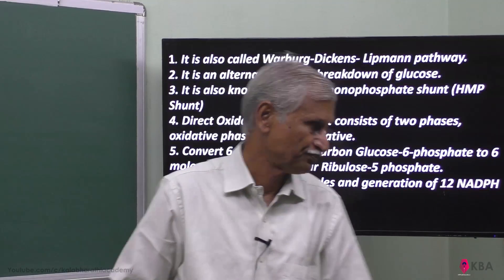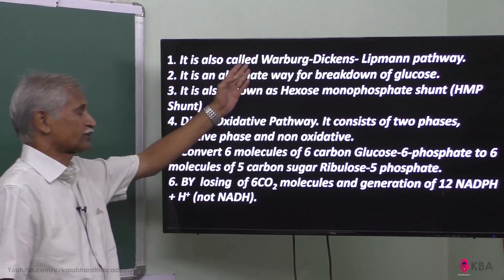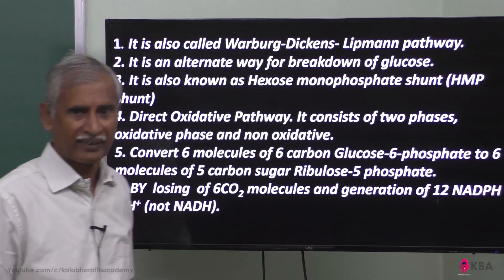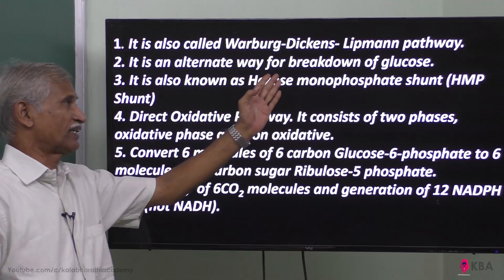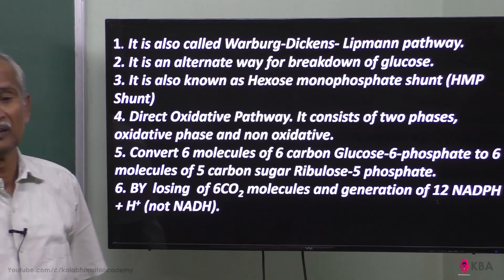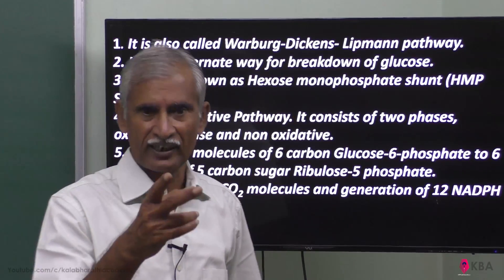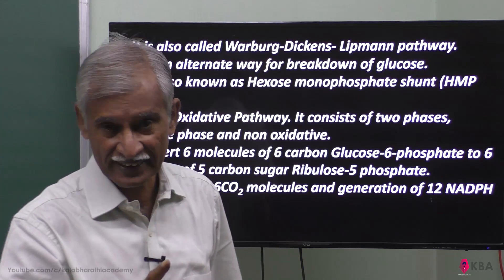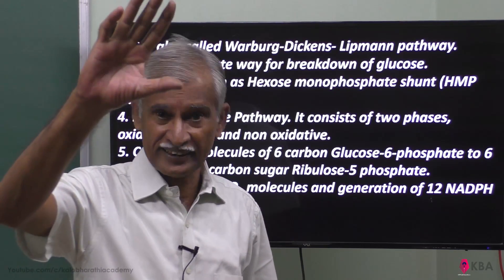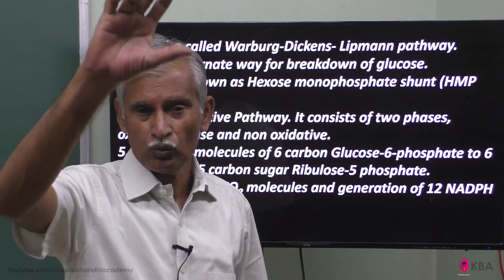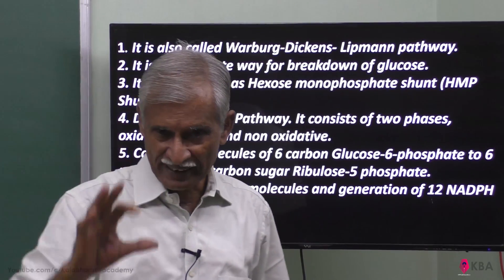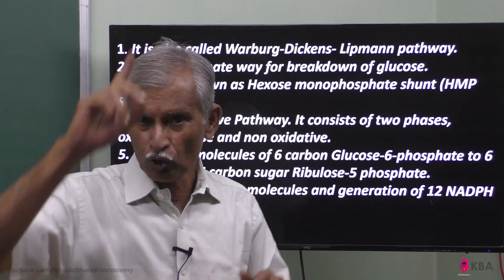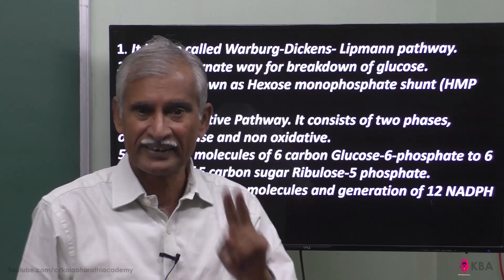This pathway is very much required. It is also called the Dickens-Lippman pathway. It is an alternate pathway for breakdown of glucose. In aerobic respiration during glycolysis, one molecule of glucose becomes two molecules of pyruvate — glucose is six carbon, pyruvate is three carbon.